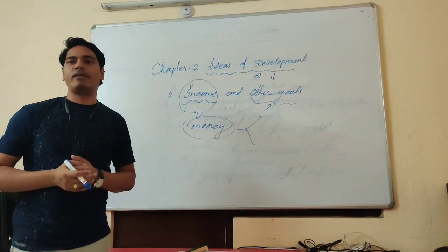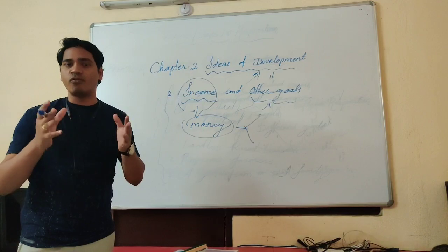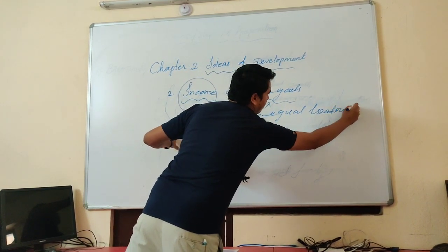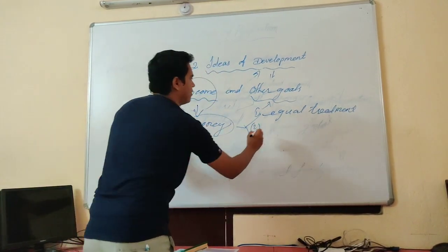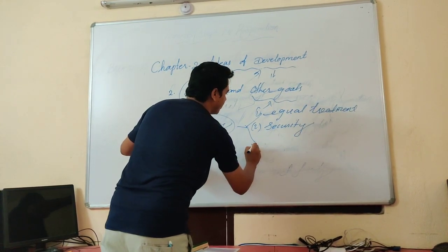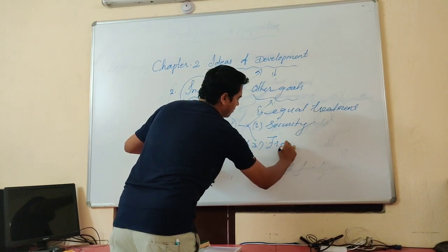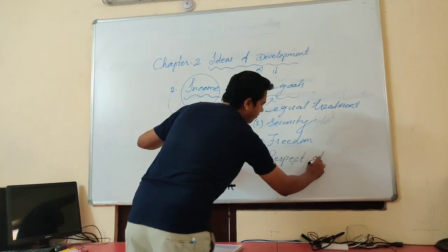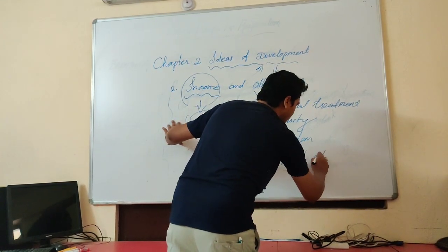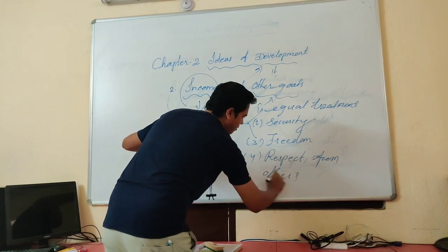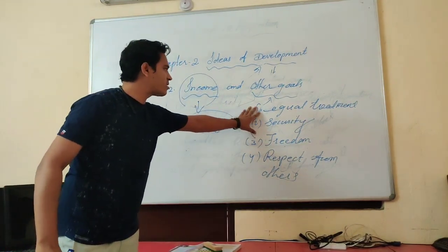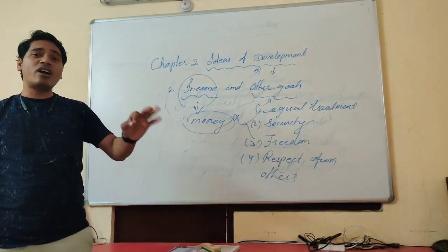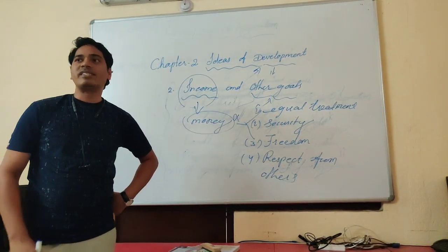Apart from money, what other things must we require in society to live? We must require three or four things: first, equal treatment; second, security; third, freedom; and fourth, respect from others. Does money bring all those things? No, never. We cannot purchase equal treatment, security, freedom, and respect by paying money — that is not possible.